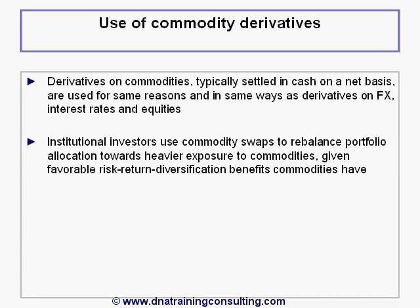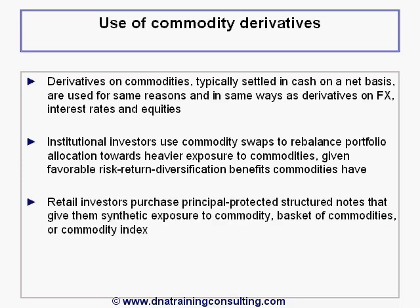Institutional investors use commodity swaps to rebalance portfolio allocation towards a heavier exposure to commodities, given the favorable risk-return diversification benefits commodities are often touted to have. Retail investors purchase principle-protected structured notes that give them synthetic exposure to a commodity, basket of commodities, or chosen commodity index.